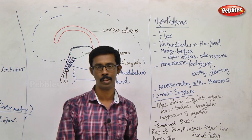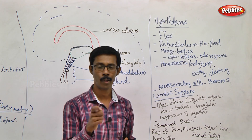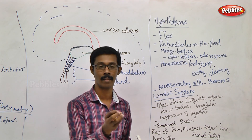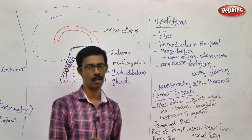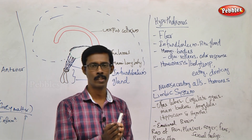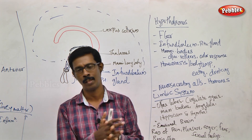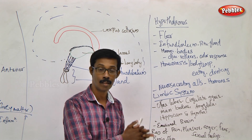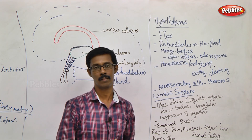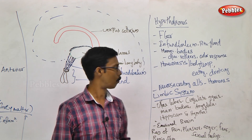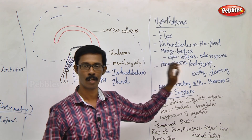Hypothalamus contains neuro-secretory cells — these are neurons that can secrete some types of hormones called hypothalamic hormones. In the brain, these hormones are one of the major functions of the hypothalamus. Through this, the pituitary gland is controlled, and through the pituitary, all hormones in the body are controlled. We will discuss the details of these hypothalamic hormones in the next chapter.